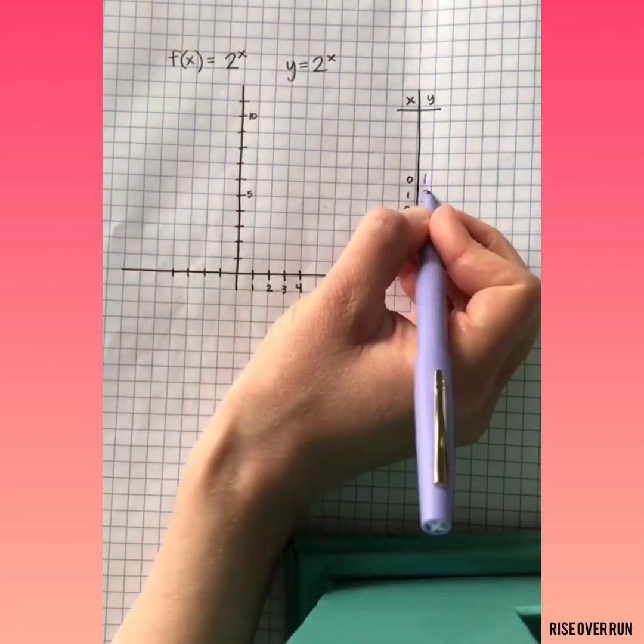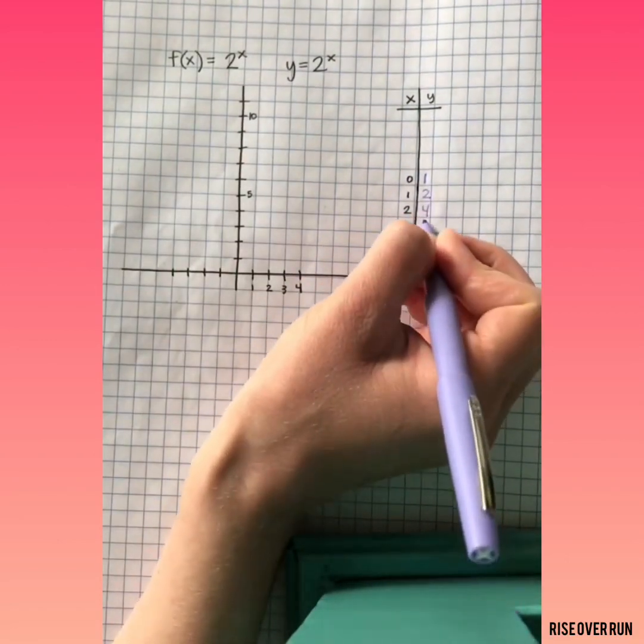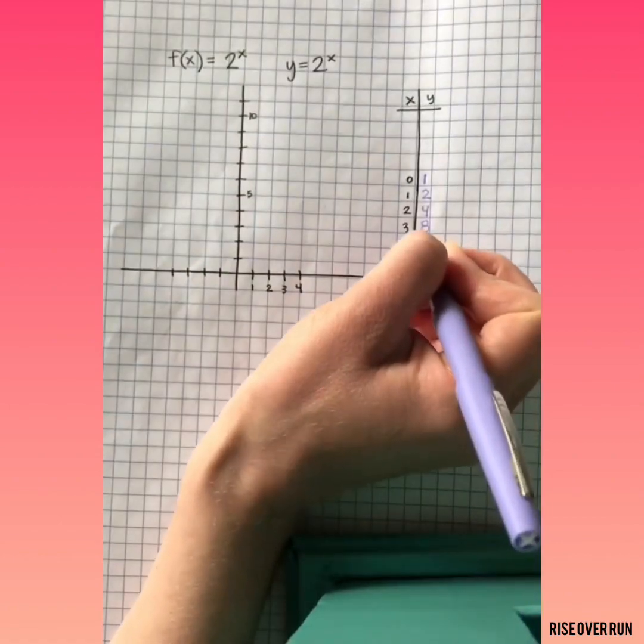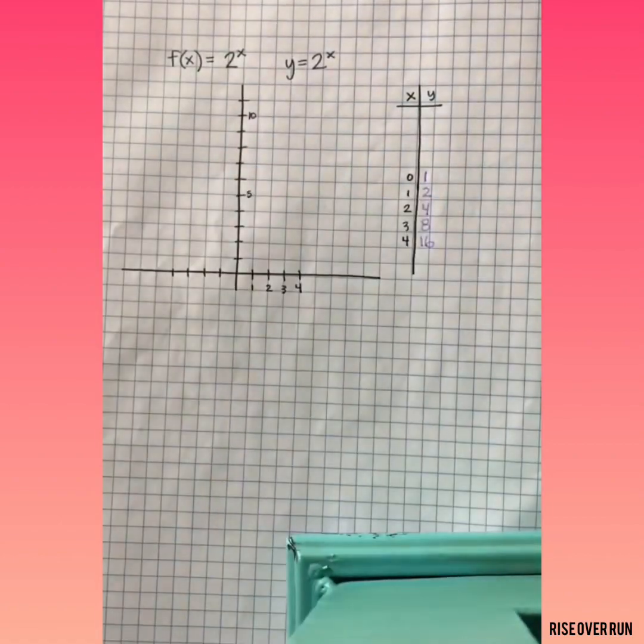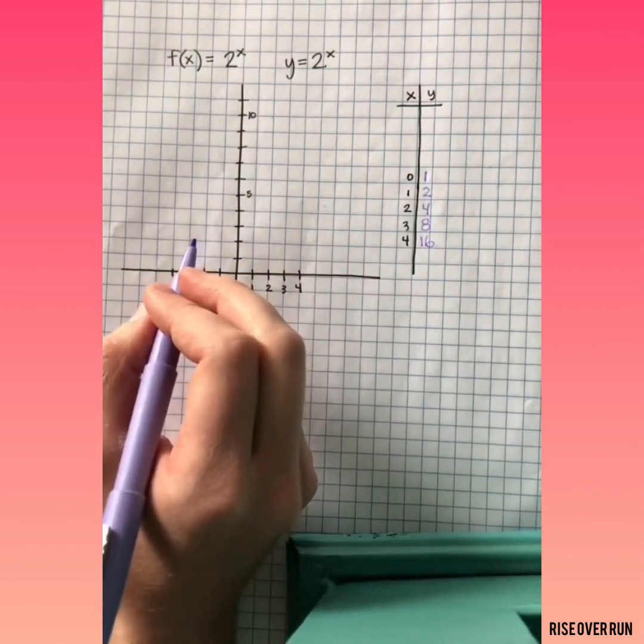2 to the 1st power is 2, 2 to the 2nd power is 4, 2 to the 3rd power is 8, and 2 to the 4th power is 16.